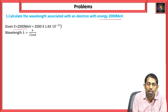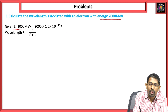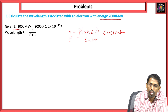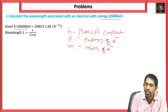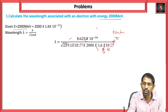Based on the de Broglie equation, lambda is equivalent to h by under root 2mE, where h is Planck's constant, E is the energy of the electron, and m is the mass of the electron. This is the formula from which we substitute all these values to get the wavelength associated with the electron.